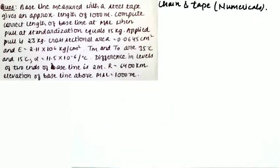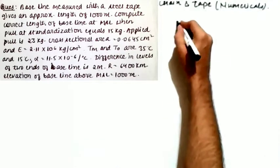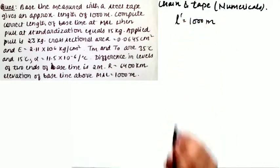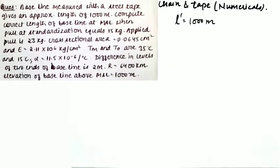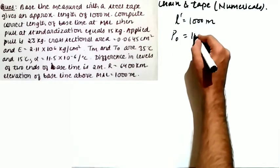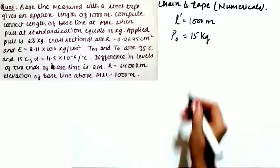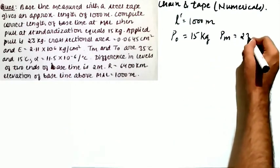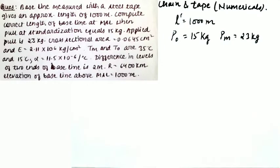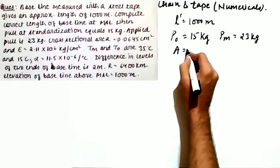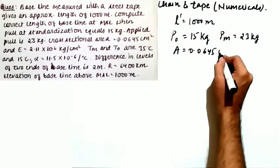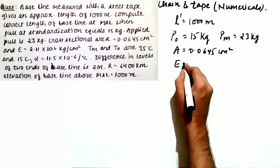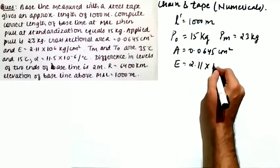The question says that a baseline measured with a steel tape gives an approximate length of 1000 meters (this is L', the measured length). Compute the correct length of the baseline at mean sea level. The pull at standardization P₀ = 15 kg. The applied pull PM = 23 kg. The cross-sectional area A = 0.0645 cm². Young's modulus E = 2.11 × 10⁶ kg/cm².